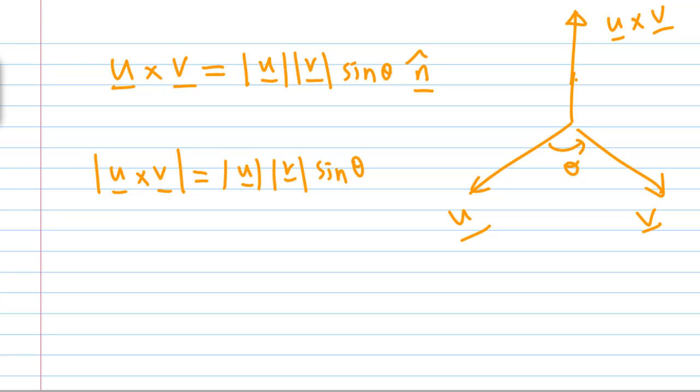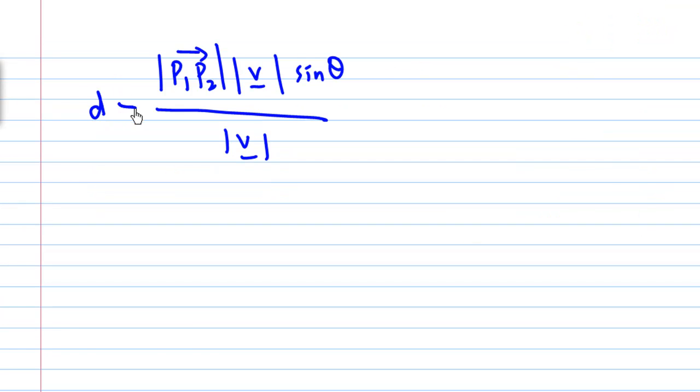Making use of this, the distance D between the two lines is the length of P1P2 times sin theta, which equals the magnitude of P1P2 cross V divided by the length of V.